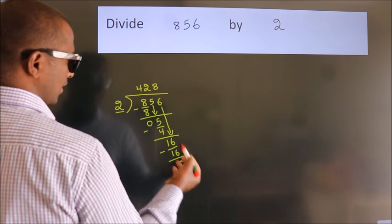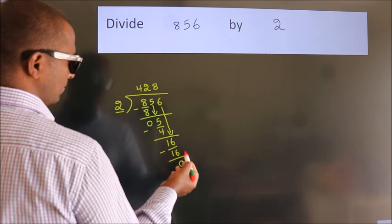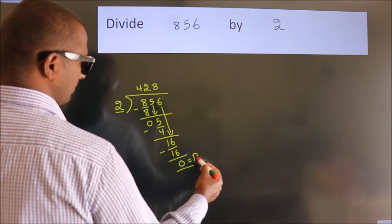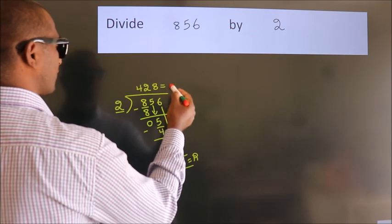After this, no more numbers to bring it down. So, we stop here. This is our remainder. This is our quotient.